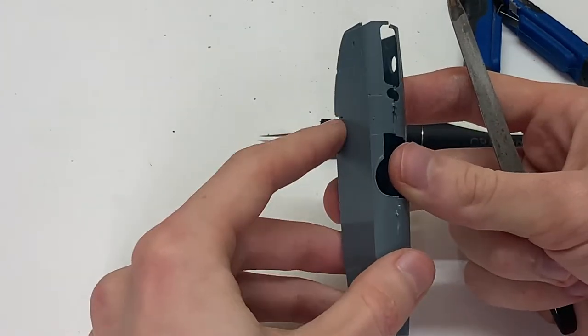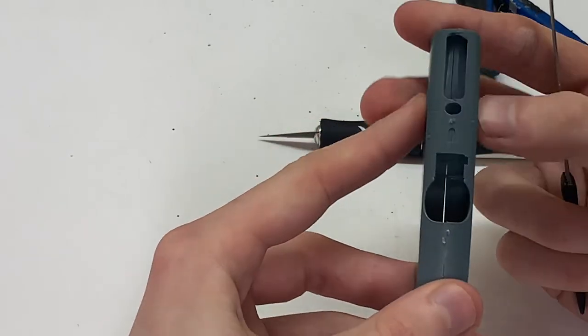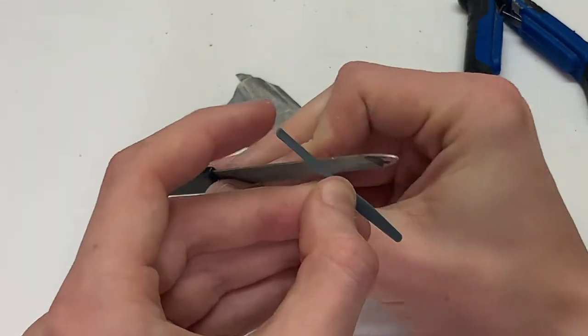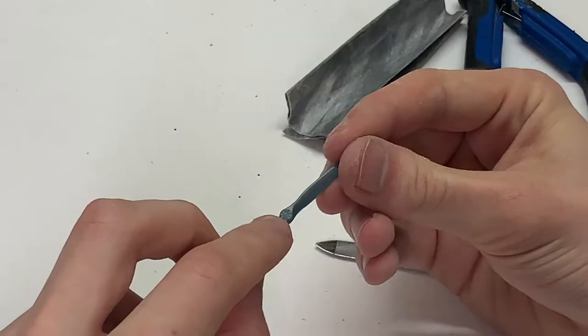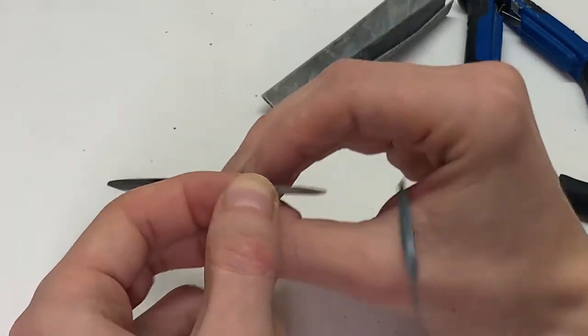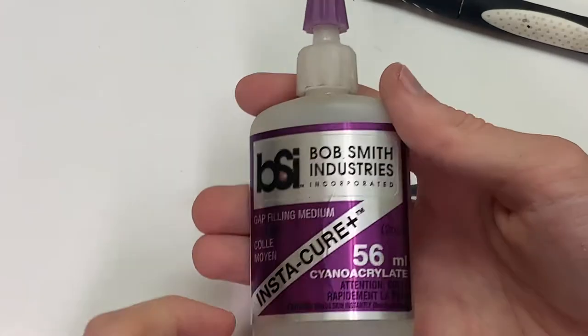A quick test fit shows that these fuselage halves go together very well, only just a bit of flash that needs to get cleaned up. The propeller then got the same treatment. And there's actually this bolt right here that I needed to remove in order to glue the respective photo-etch part to it, just to add a little bit of detail to it.